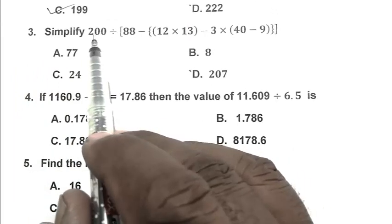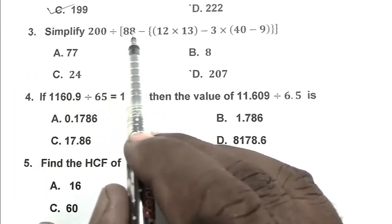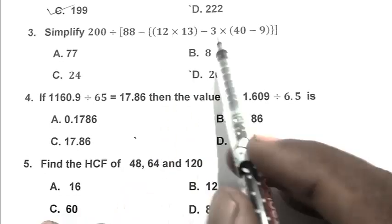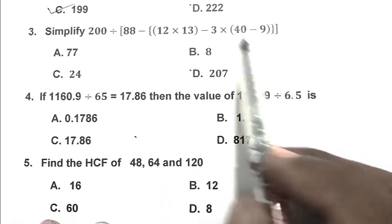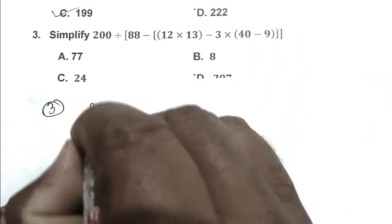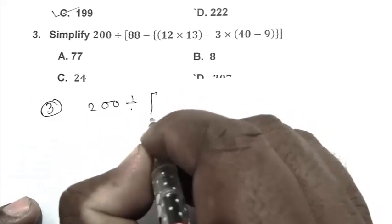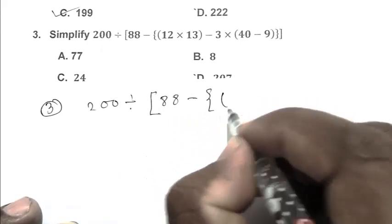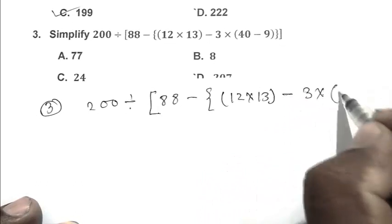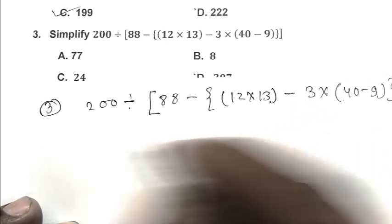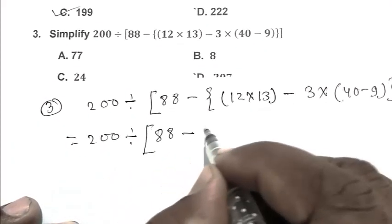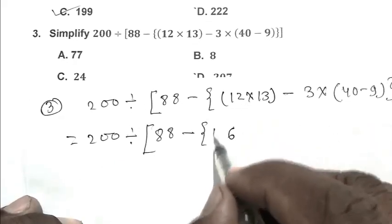Question number 3: Simplify 200 divided by open bracket 88 minus open bracket 12 multiplied by 13 minus 3 multiplied by 40 minus 9 close bracket close bracket. The expression is 200 divided by 88 minus 12 multiplied by 13 minus 3 into 40 minus 9.